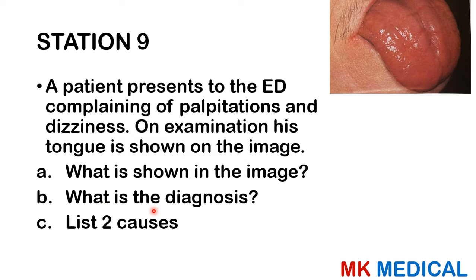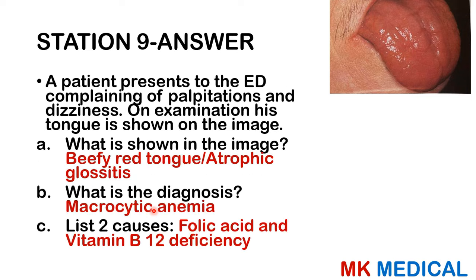Station nine: a patient presents to the emergency department complaining of palpitations and dizziness. On examination, the tongue is shown in the image. What is shown, what is the diagnosis, and list two causes? The answer: this is a beefy red tongue — the patient has atrophic glossitis. This is seen in macrocytic anemia and could be the result of either folic acid deficiency or vitamin B12 deficiency.